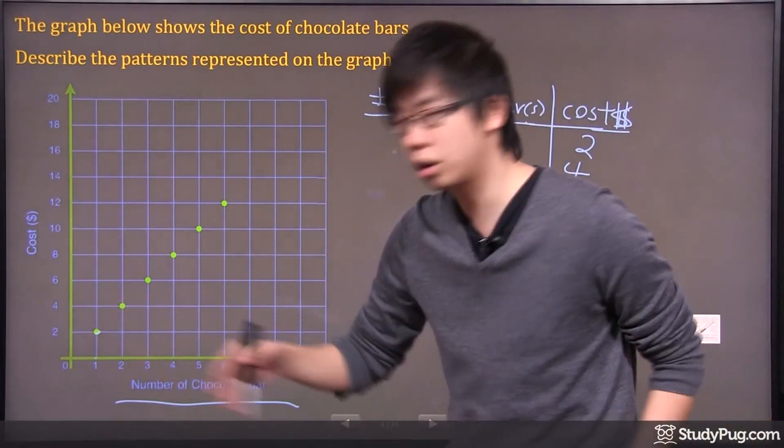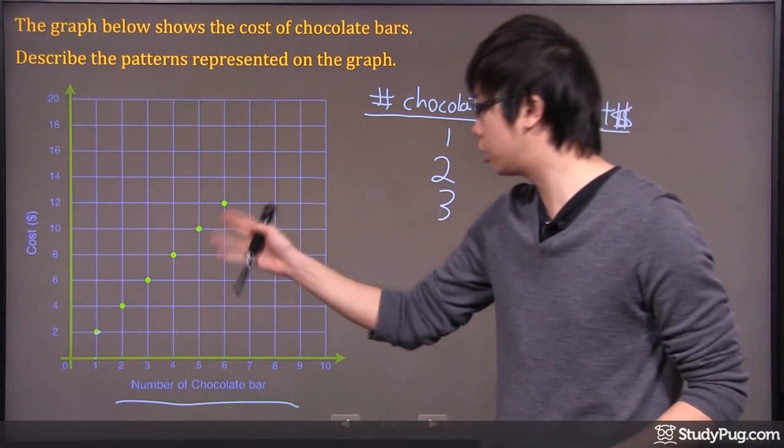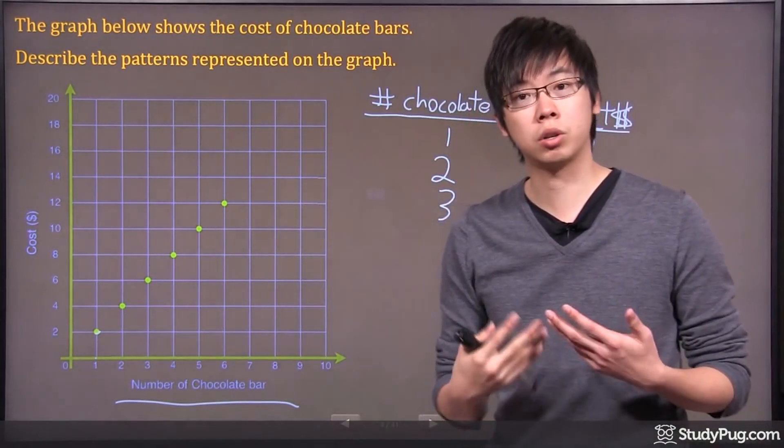And if you buy 3, it's going to cost you $6. And so on until you get the 6th chocolate bar, it's going to cost you $12.